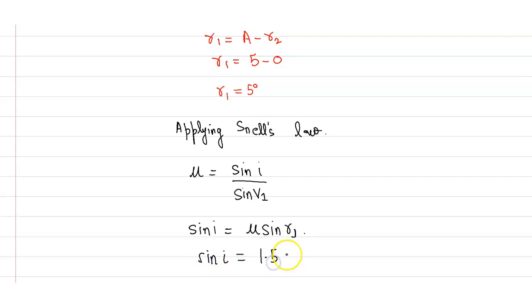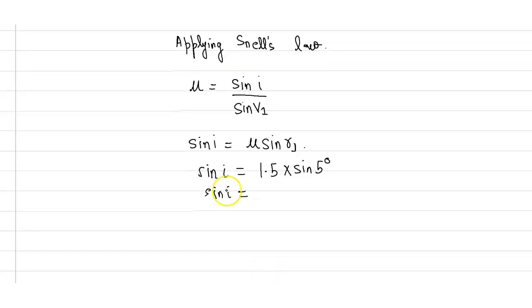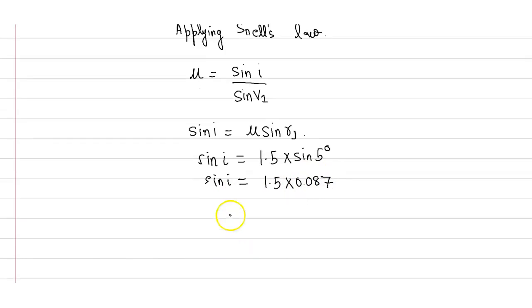1.5, the refractive index, times sine of 5 degrees. So sine i will become sine i is equal to 1.5 times 0.087, that's the value of sine 5 degrees. So if we simplify this equation further,